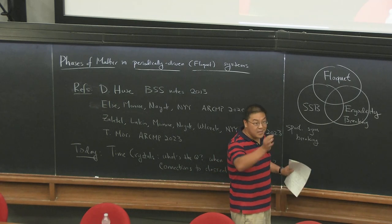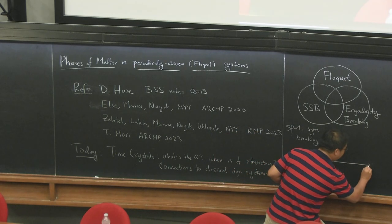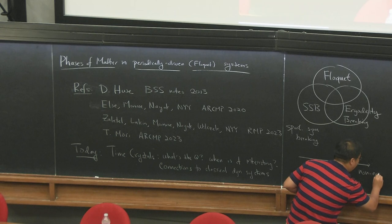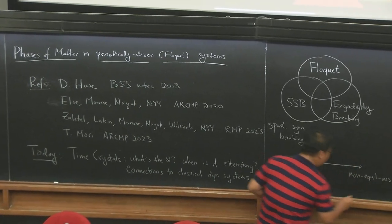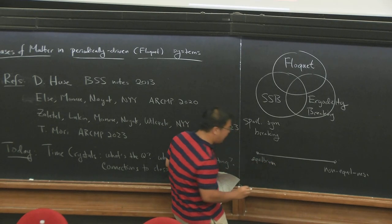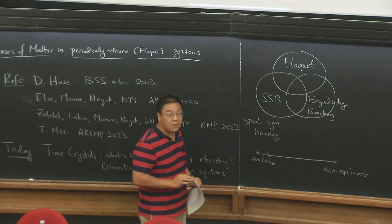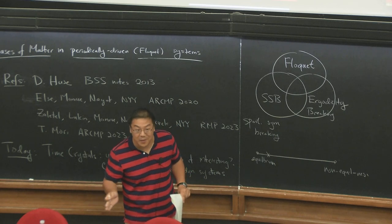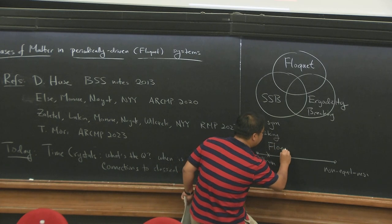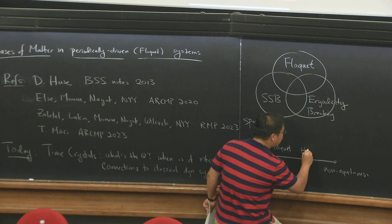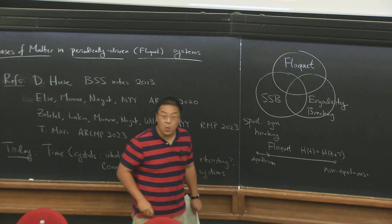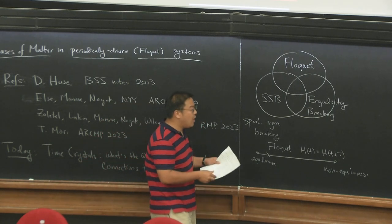Just to put some context in mind: if I had an axis for non-equilibrium-ness, I would say at one fixed point there are truly equilibrium, static systems. Where we're going to sit for most of the lecture is not that far away from equilibrium—it's kind of the simplest example of a non-equilibrium system. Those are, of course, Floquet systems, where essentially the equations of motion return back to themselves after some period.